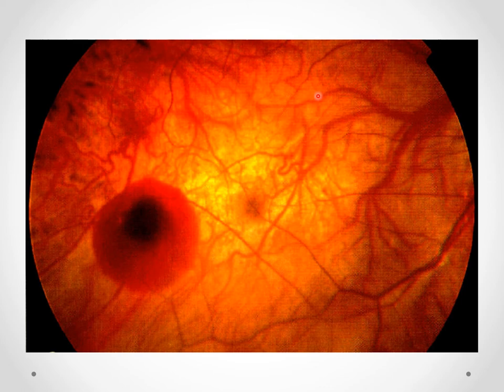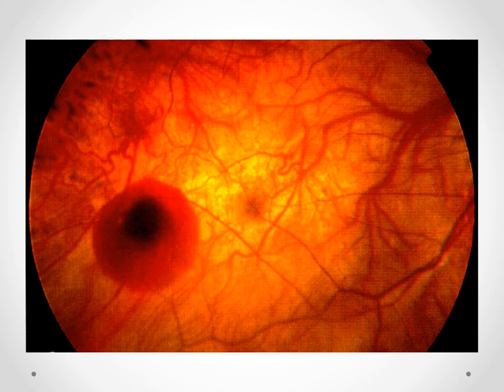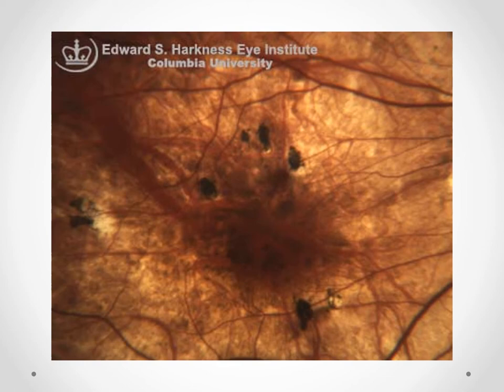Here we have a sub-retinal hemorrhage. If a break develops in Bruch's membrane, newly sprouted choroidal vessels can enter into the neurosensory retinal space. Because these vessels are immature and faulty, they can leak fluid, lipid, or even blood. With accumulation of blood or hemorrhage in the sub-retinal space that becomes pigmented over time, this is called a Fuchs spot — essentially scarring over time.